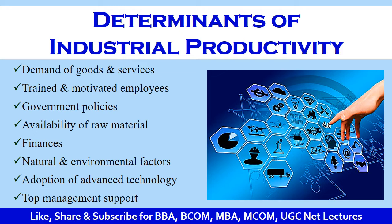There are certain factors affecting industrial productivity, also called the determinants of industrial productivity. First, there should be demand for the goods and services to be produced. The presence of efficient and well-trained employees improves industrial productivity. Employee motivation is also an important determinant, as it reduces wastages and improves overall accuracy of production. The prevailing government policies related to labor laws and taxation also impact industrial productivity.